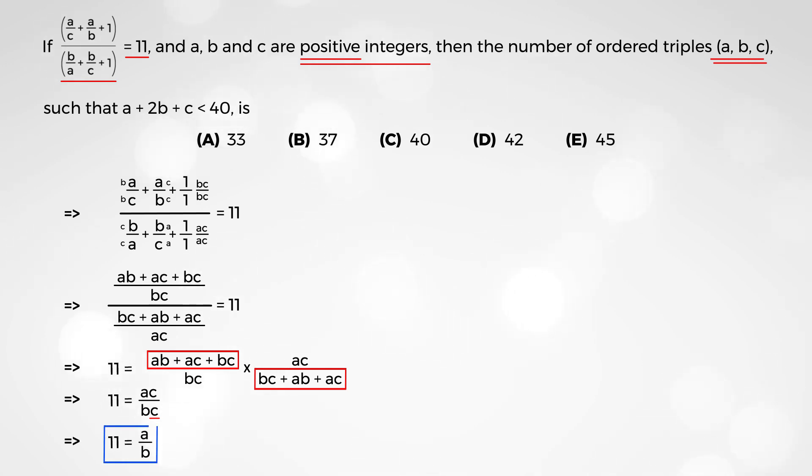So, that's the first condition. And the second condition, of course, they give you is a plus 2b plus c is less than 40. So, the question is basically asking us, how many sets or triples of the form a, b, and c can you get that satisfy these two equations?